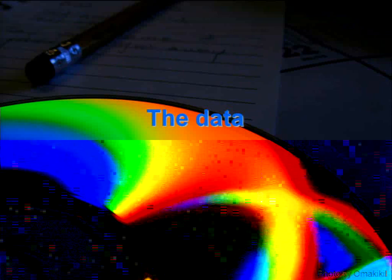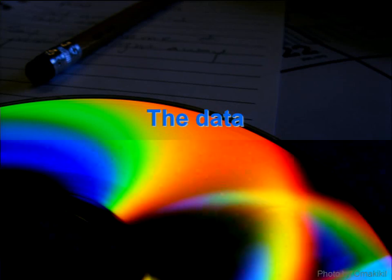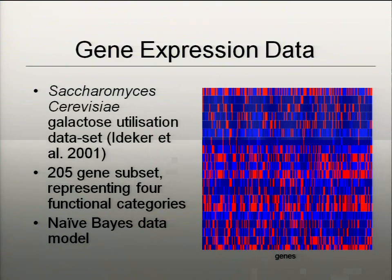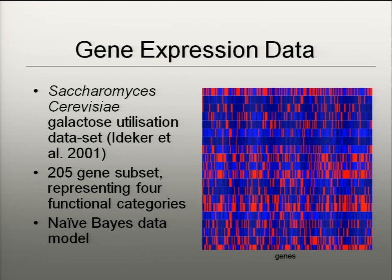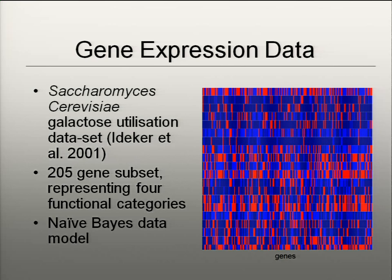I'm going to talk about one particular pair of data sets and their characteristics and the sorts of results we get. Gene expression data is one type of data we typically use. We did analysis on a public data set that is well understood — it's a yeast data set. We've done various validations on synthetic data, but what you really want to do is move on to biological data so you can understand biologically whether you're getting it right. This is a small yeast galactose utilization data set, a particularly small subset.